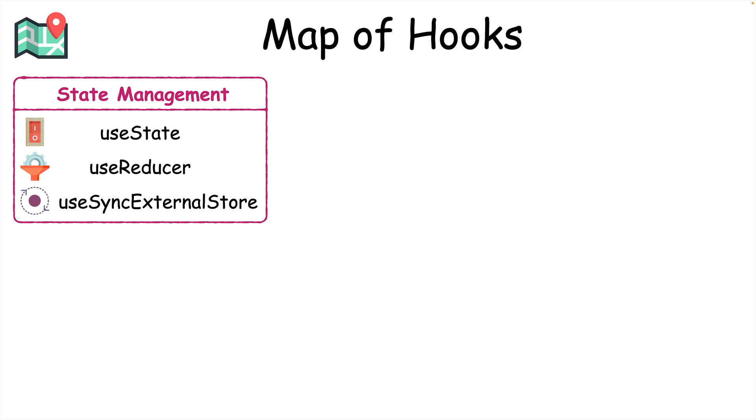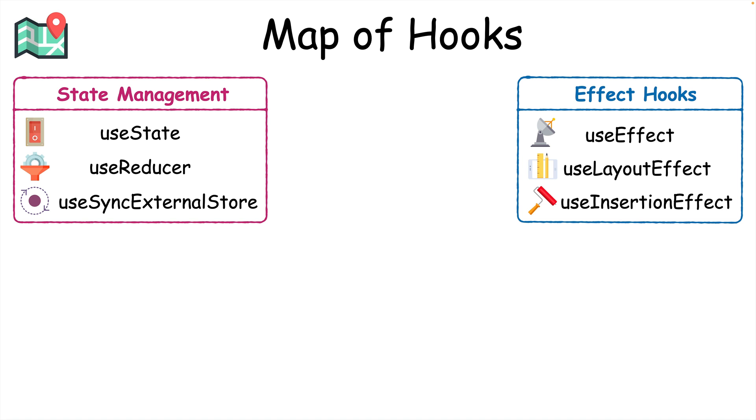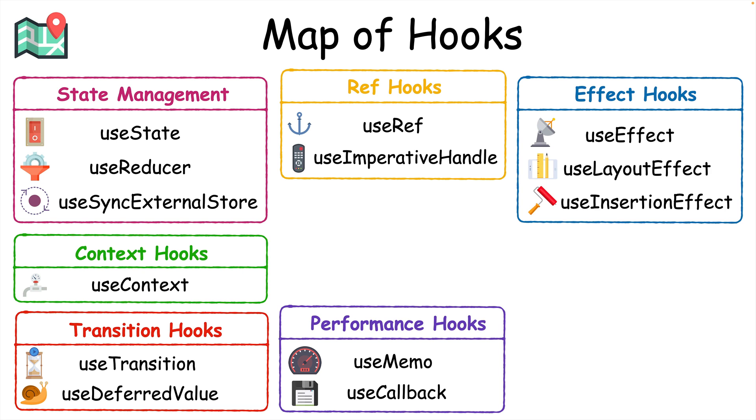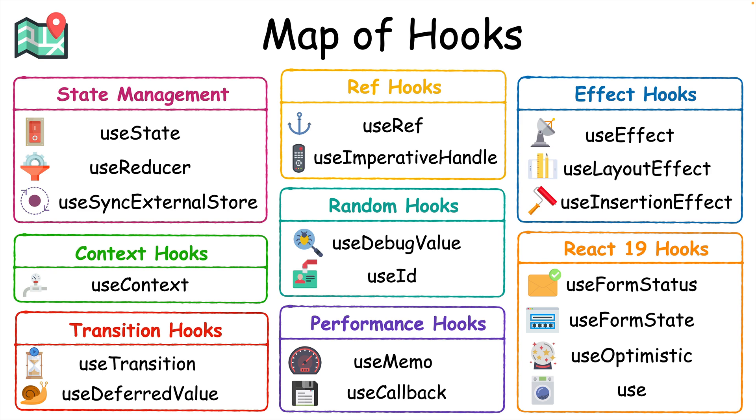Starting with state management hooks to work with React state, effect hooks to perform side effects, ref hooks to reference JavaScript values or DOM elements, performance hooks to improve app performance with memoization, context hooks to read from React context, transition hooks to use transitions for better user experiences, some random hooks, and some powerful new hooks introduced in React 19.